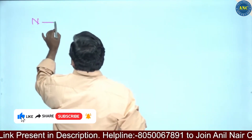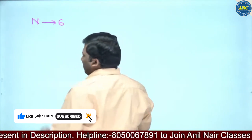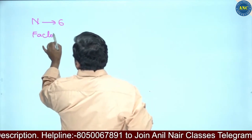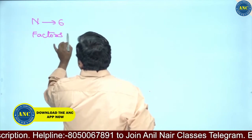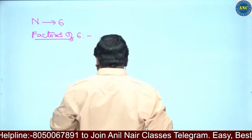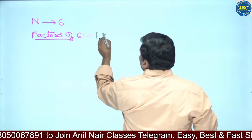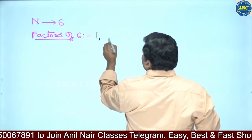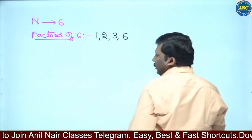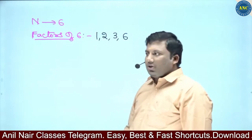Suppose I take a number 6 — what are the factors of 6? Let me write them down. Factors of 6 are: 1 is a factor, 2 is a factor, 3 is a factor, and 6 is a factor. So the factors of 6 are 1, 2, 3, and 6.